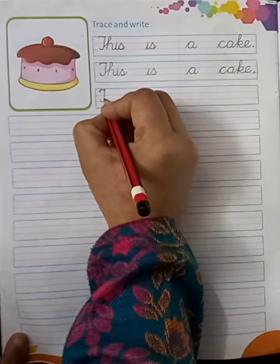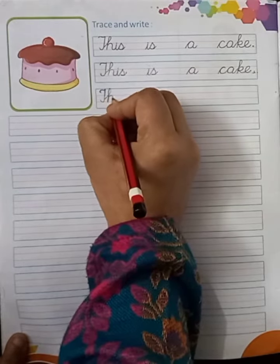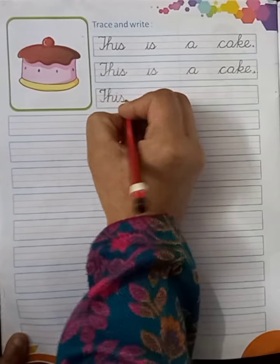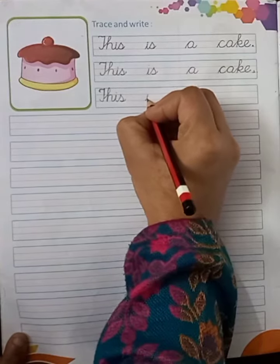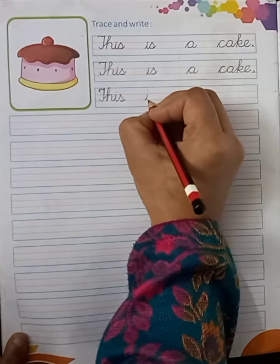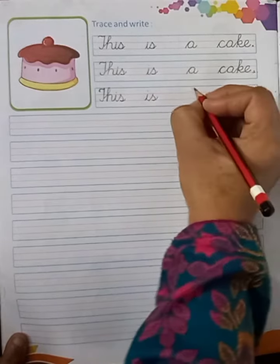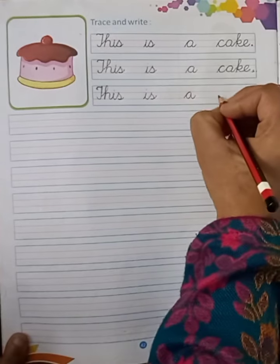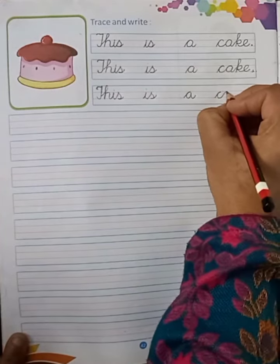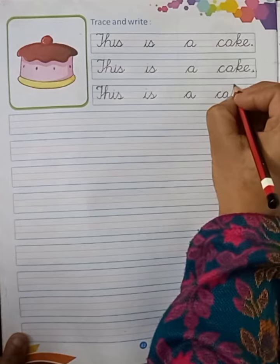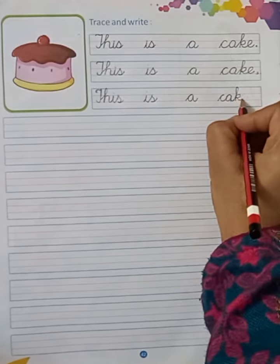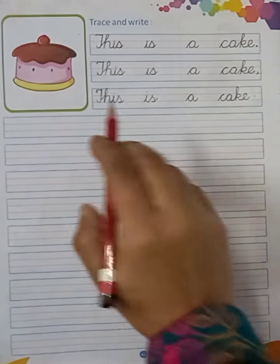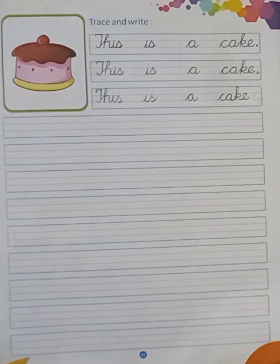T-H-I-S, this. I-S, is. A cake. C-A-K-E, cake. C-A-K-E, cake. This is a cake.